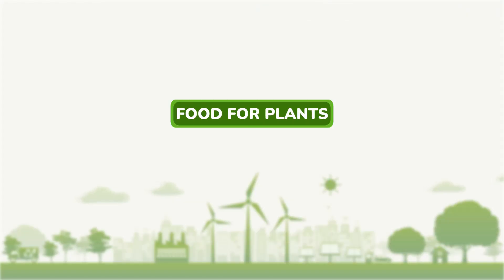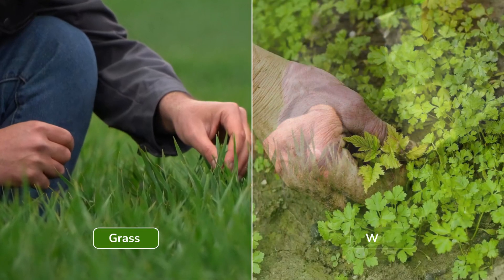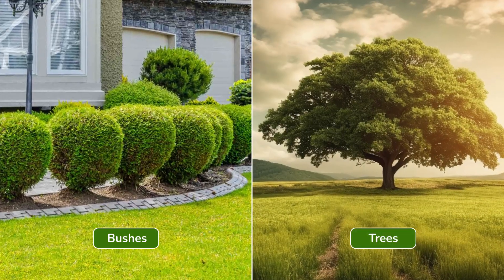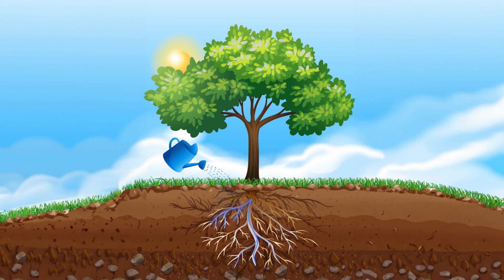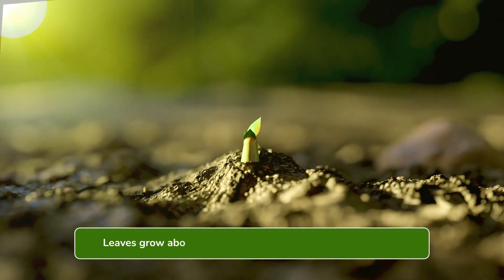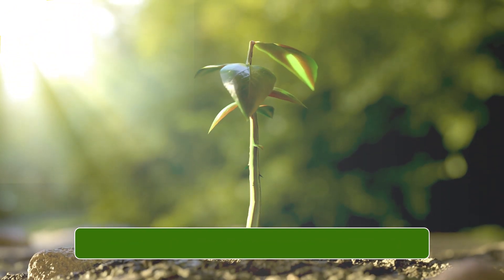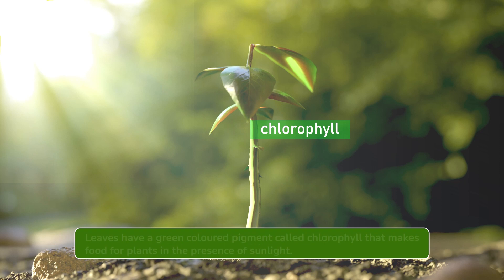Food for plants. A large number of plants grow on earth like grass, weeds, bushes, trees, etc. Plants make their own food. Roots absorb water and other nutrients from soil. Leaves grow above the soil and are exposed to sunlight and air. Leaves have a green-colored pigment called chlorophyll that makes food for plants in the presence of sunlight. This process is called photosynthesis.